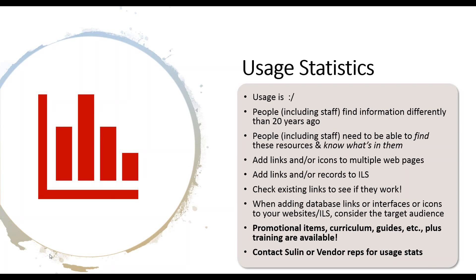Usage statistics. I don't want to say usage is horrible — usage is interesting. Some places and some databases have very, very high usage. It's hard to compare because each vendor has different metrics — it's not comparing apples to apples. Everyone has different ideas of what a search is, so ABC-CLIO searches may not be exactly what World Book searches are.